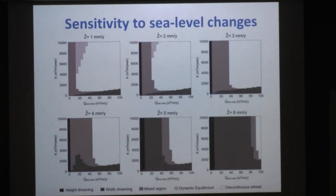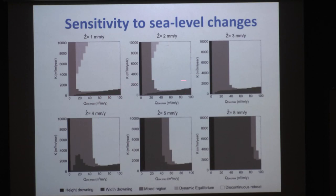What happens if we increase the sea level rise rate? The phase diagram for two millimeters per year expands in the dark colors corresponding to high drowning and width drowning as the rate increases — which is intuitive. Interestingly, this happens in a nonlinear fashion, with what appears to be a threshold somewhere between four and five millimeters per year where drowning becomes increasingly dominant.